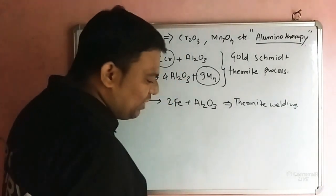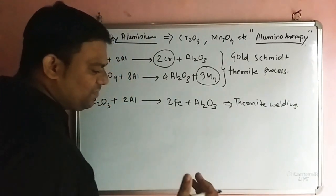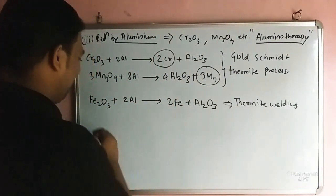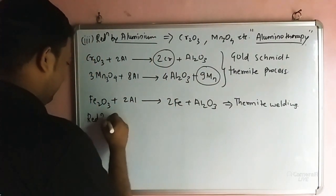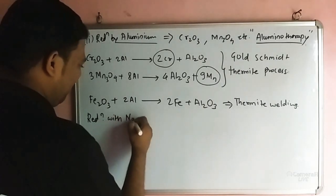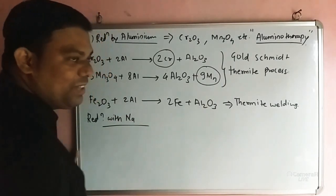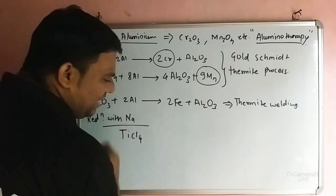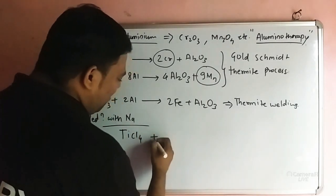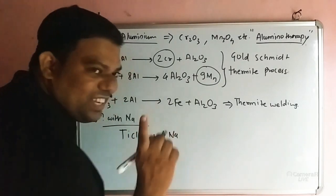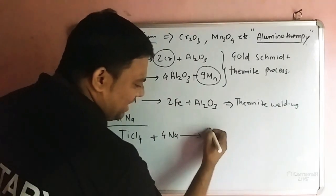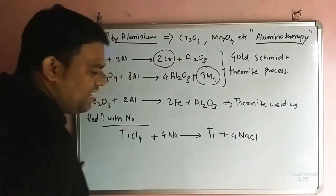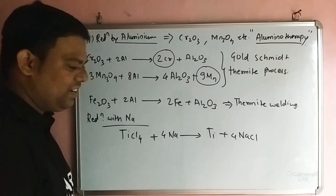Now we will see reduction with sodium, magnesium, or calcium. Using sodium as a reducing agent: TiCl4 + 4Na gives Ti + 4NaCl. Titanium is extracted using this reaction with sodium as the reducing agent.